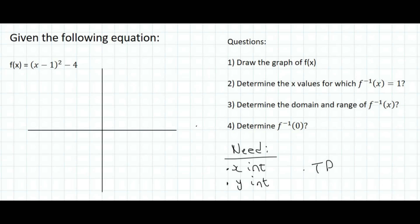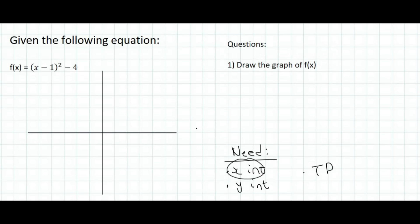So let's get started. You could do it in any order, but I'm just going to start with the x-intercepts. To find the x-intercepts, you make y equal to zero. Now, there are two main ways to solve this. The most popular approach would be to multiply the bracket out, collect all the like terms, and then use the quadratic formula, or, if possible, you could simply factorize.